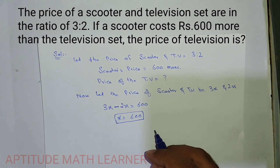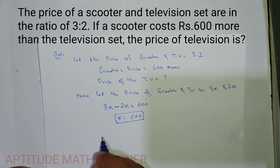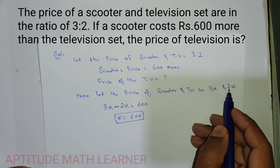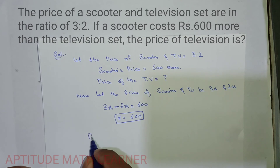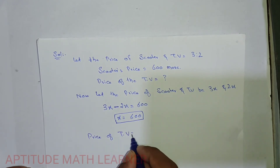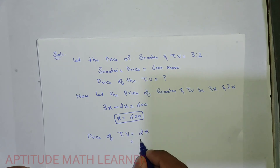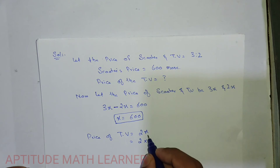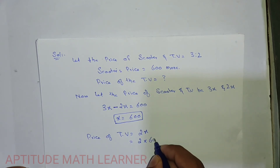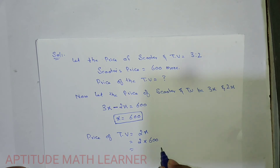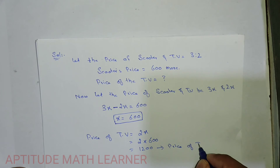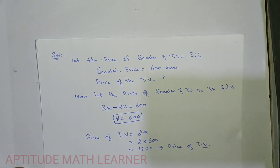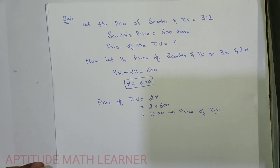The question asks for the price of the television set. The price of the television is 2x. To find it, we multiply 2 by x, which is 600, so 2 times 600 equals 1200. So the price of the TV is rupees 1200.